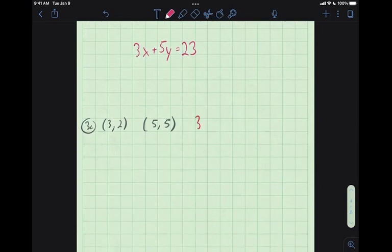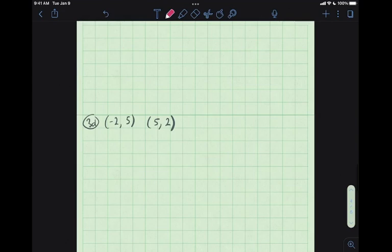If you want to do 3c on your own, you should get 3x plus, oops, no, minus, minus 2y equaling 5. Alright, and in this last example, 3d that I will do, we should get an equation that looks like 3x plus 7y equals 29.